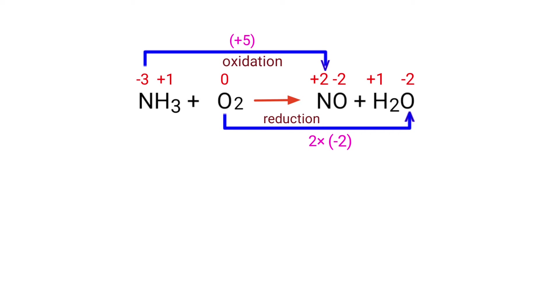Now you can make the increased oxidation number equivalent to the decreased oxidation number. To do this, you can multiply the increased oxidation number by a coefficient of 4 and multiply the decreased oxidation number by a coefficient of 5.